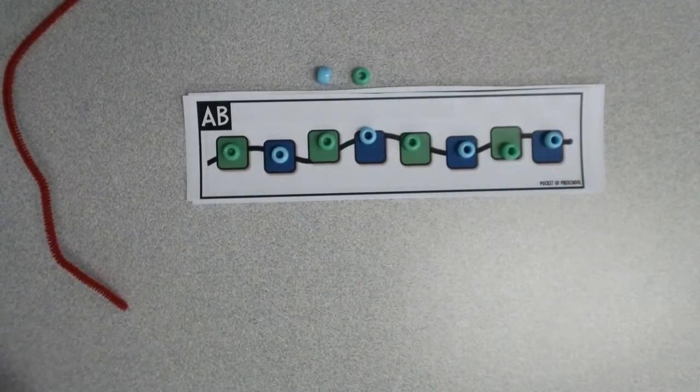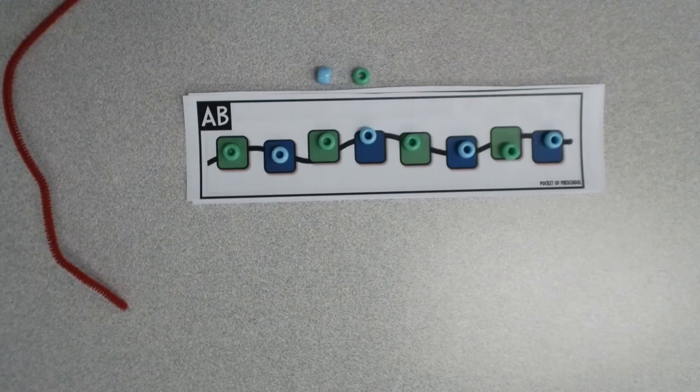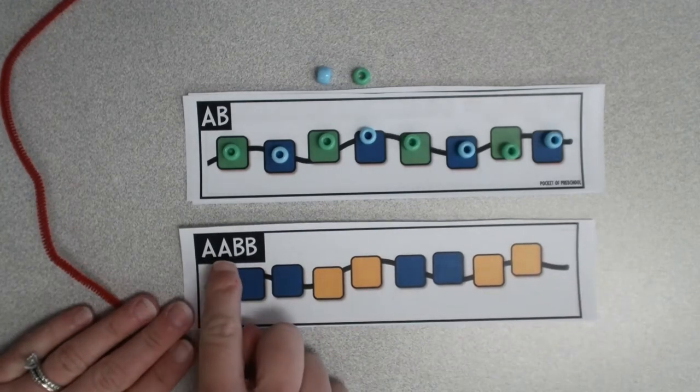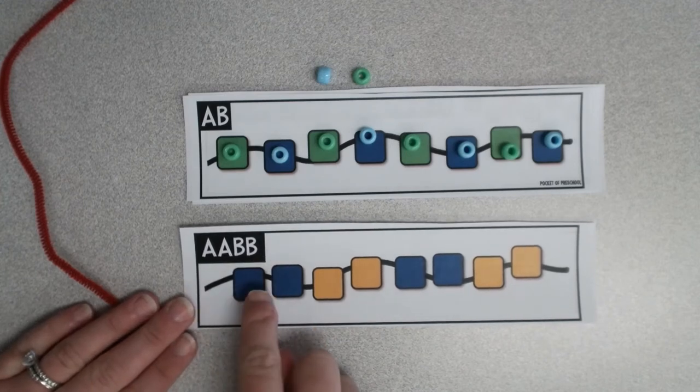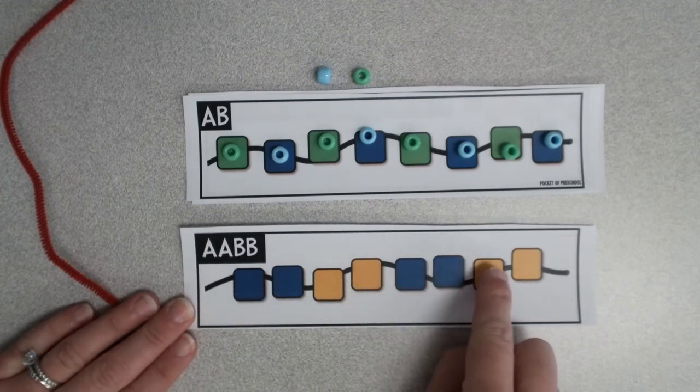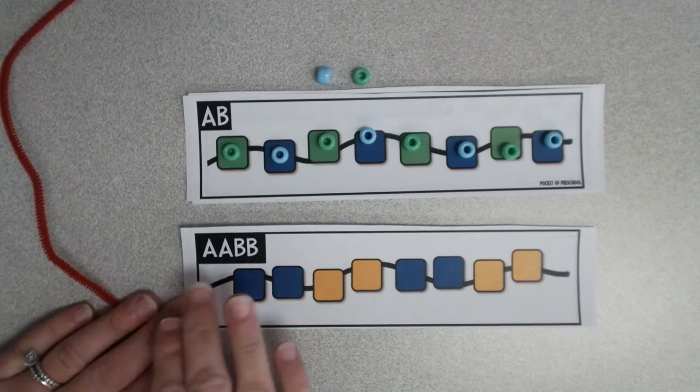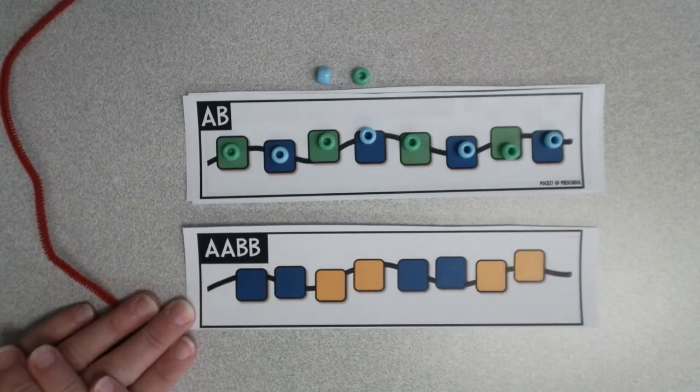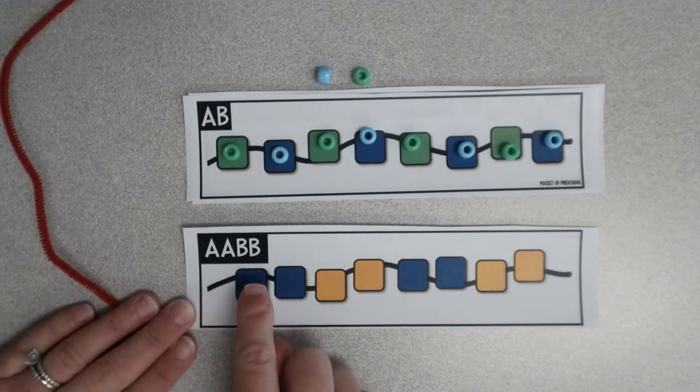If you'd like, you can make it a little bit more challenging and do a pattern like this. This is called an A-A-B-B pattern. Blue, blue, yellow, yellow. Blue, blue, yellow, yellow. The kids, after they build their patterns, they can practice going back and saying the name of their pattern, just like I did.